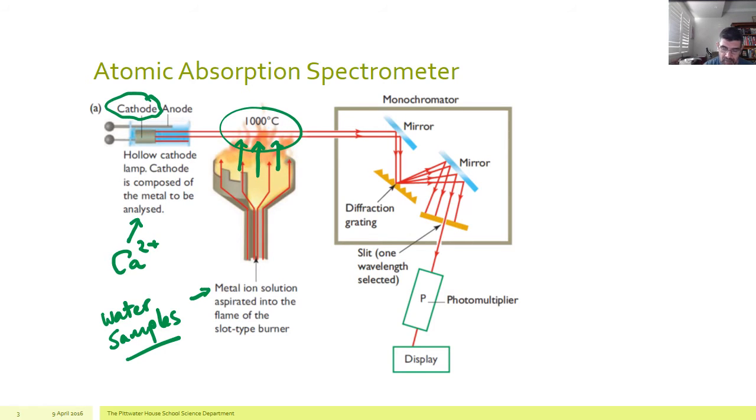Now, as it goes into the flame, the wavelengths of light that are being emitted by the cathode are going to correspond to those wavelengths of light that are going to be absorbed by the calcium atoms that are now present in this region.